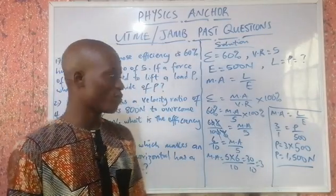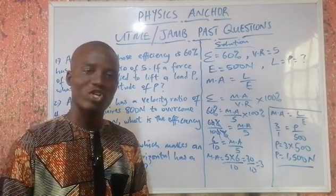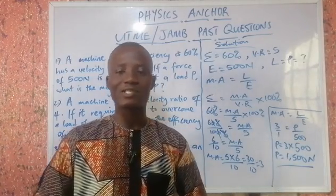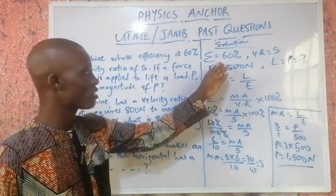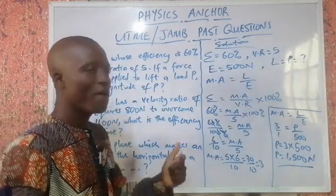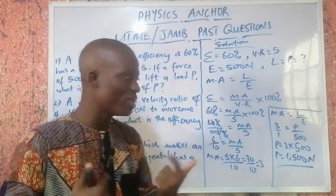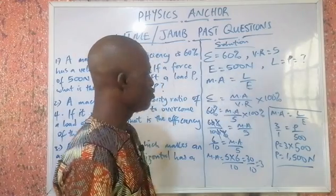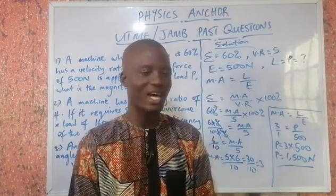What did we do here? Always list out your parameters — just like in a kitchen, when all items are in front of you, you'll know if something is missing. Once you list everything, you can see: I need load but I have effort, so mechanical advantage will help. Since efficiency and velocity ratio are given, I can find MA, then use MA with effort to get the load.